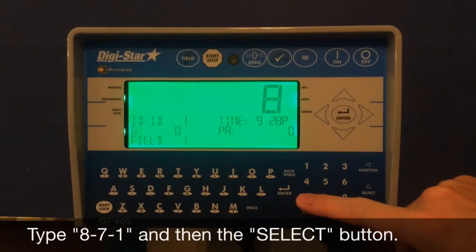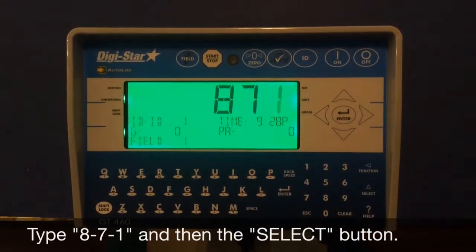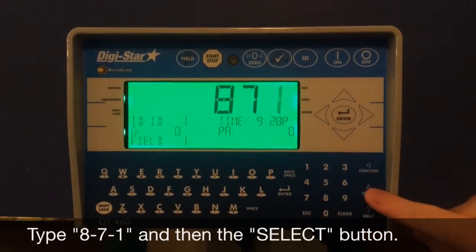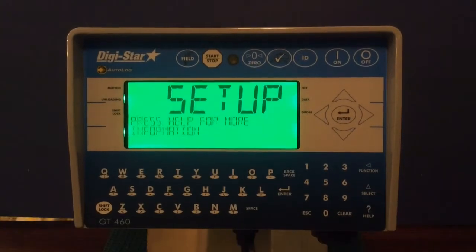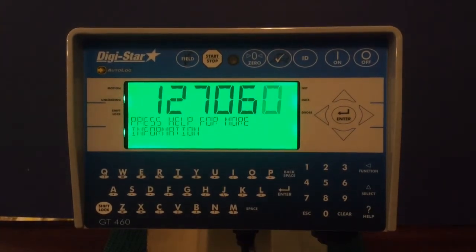In order to access the menu, type 8-7-1 and hit the select button. After pressing the select button, the current setup number will display.